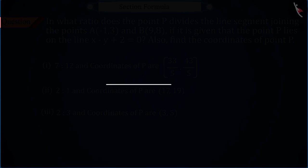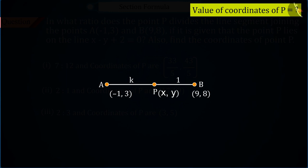Let's assume that point P divides the segment AB in K ratio 1. So can you find the values of coordinates X, Y of P?